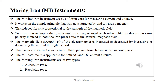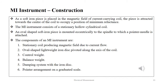The MI instrument is applicable for both AC and DC current circuits. The moving iron instruments are of two types: attraction type and repulsion type. As a soft iron piece is placed in the magnetic field of a current-carrying coil, the piece is attracted towards the centre of the coil to occupy a position of minimum reluctance. The MI instrument consists of a stationary hollow cylindrical coil, and an oval-shaped soft iron piece mounted eccentrically to the spindle to which a pointer needle is attached. The primary components are: stationary coil, oval-shaped lightweight iron disc pivoted along the axis of the coil, control weight, balance weight, damping system with the iron disc, and a pointer arrangement on a graduated scale.